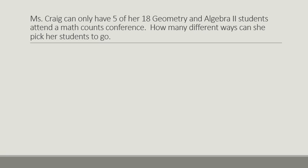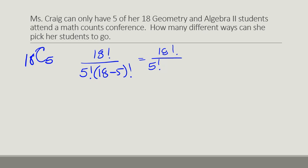So here is an example. If I have 5 of my 18 geometry and algebra students attending a math conference, how many different ways can I pick my students to go? So I have 18 students taken five at a time. So it's 18 factorial over 5 factorial and 18 minus 5 factorial. So it's 18 factorial over 5 factorial times 13 factorial.